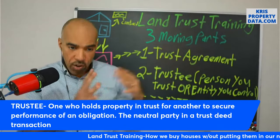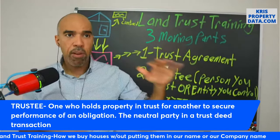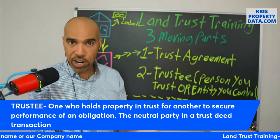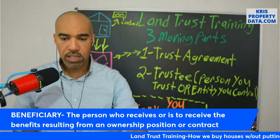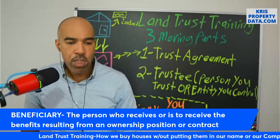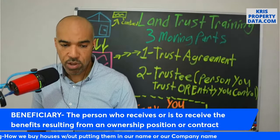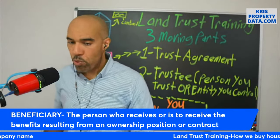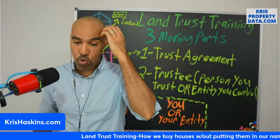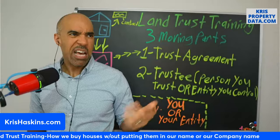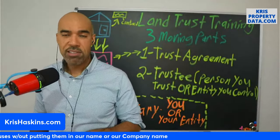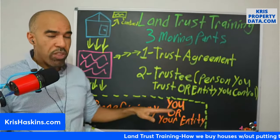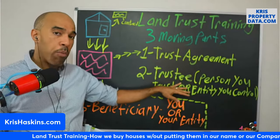So far we've got the trust agreement — that's the document we're going to go over. The trustee is the person that you hire to sign on your behalf. And the last is going to be your beneficiary — this is the big daddy, this is us. The beneficiary is the person who receives or is to receive the benefits resulting from an ownership position or contract. So we're the owner of the trust agreement. This is nothing but a grantor revocable trust — same thing, exact same documents, different name.